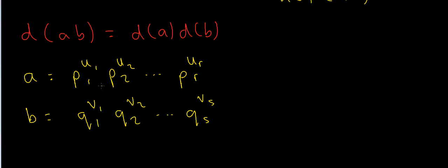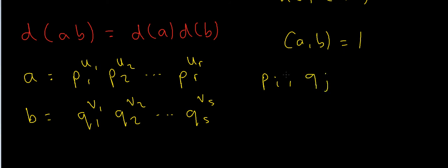Now it's very important that the primes p1, p2, ..., pr and the primes q1, q2, ..., qs are all distinct. The reason is that I want a and b to be coprime — they share no common factors apart from 1. To ensure coprimality, none of these primes can repeat; there's no possibility that pi equals qj for any i and j. So each pi and qj are distinct prime numbers.